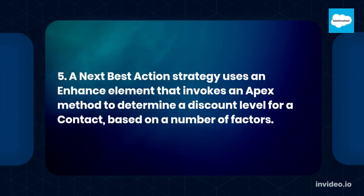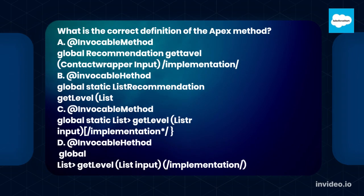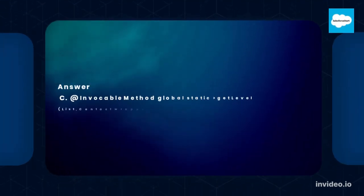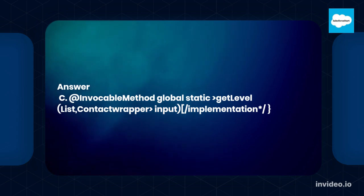Question 5: A next best action strategy uses an enhance element that invokes an Apex method to determine a discount level for a contact based on a number of factors. What is the correct definition of the Apex method? Options include various combinations of @InvocableMethod with global static List<Recommendation> method signatures accepting List<Contact> input parameters. Answer: D. @InvocableMethod global static List<Recommendation> getLevel(List<Contact> input).